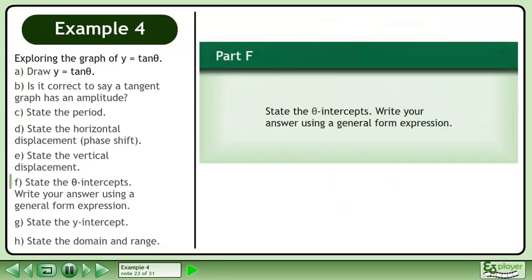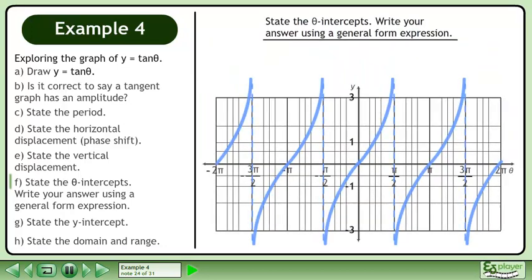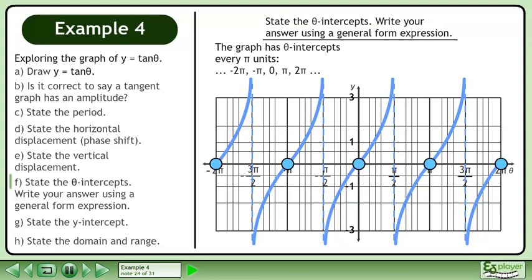In part f, state the theta intercepts. Write your answer using a general form expression. The graph's theta intercepts every pi units. They include negative 2pi, negative pi, zero, pi, and 2pi extending forever in both directions.